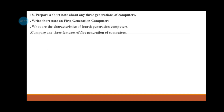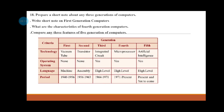In this chapter, we will learn a new generation of computers and explain how many generations there are. Prepare a short note on any 3 generations of computers — 1st generation, 4th generation, and the 5th generation, which has 3 features.